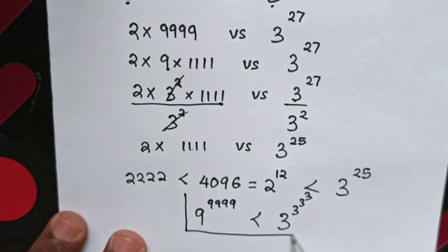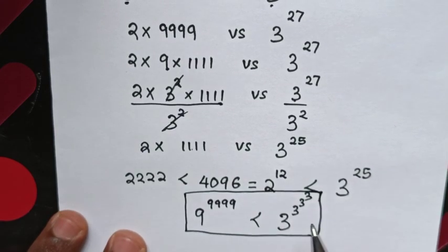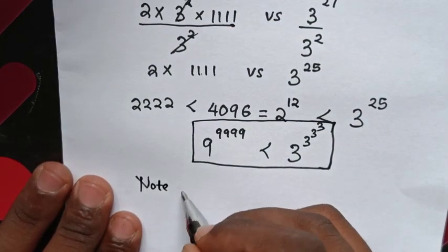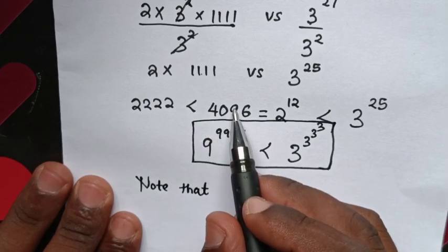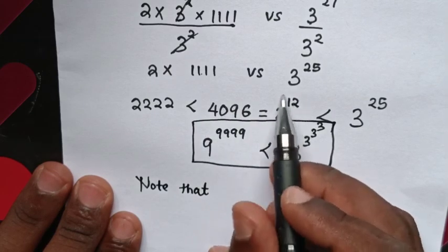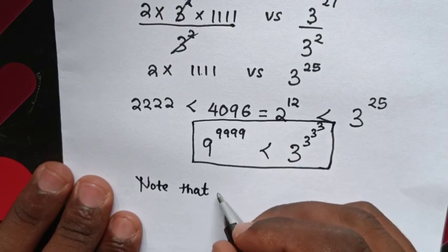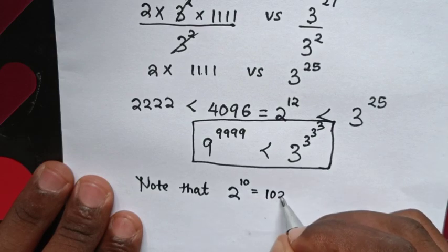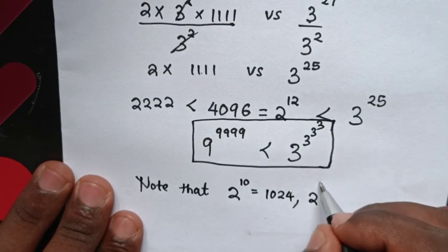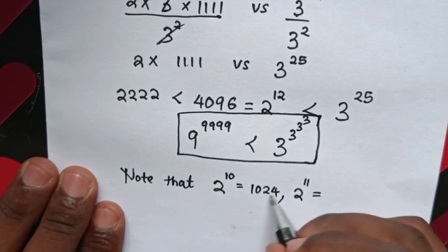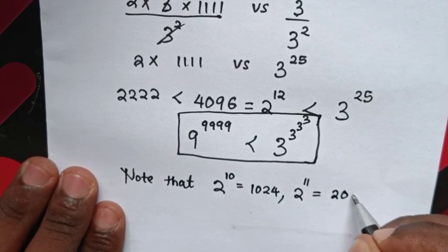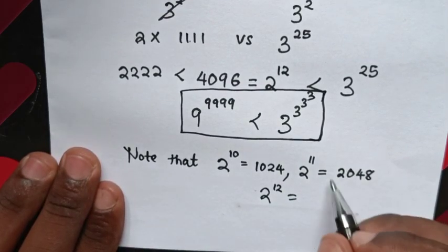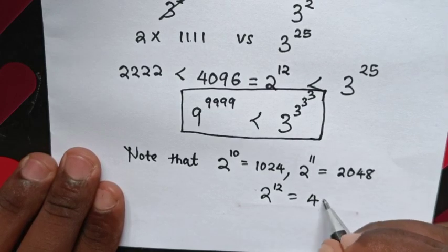So that is the final answer. Note: 4096 equals 2^12. We know 2^10 = 1024, then 2^11 = 1024×2 = 2048, and 2^12 = 2048×2 = 4096.